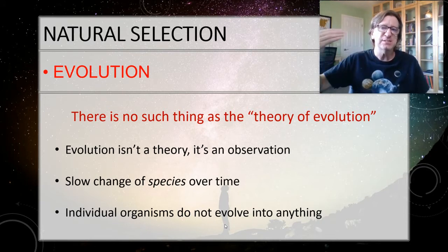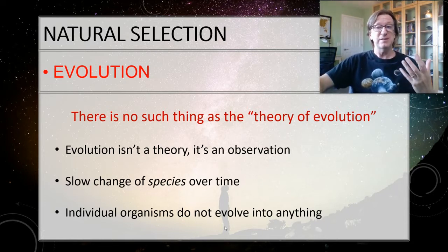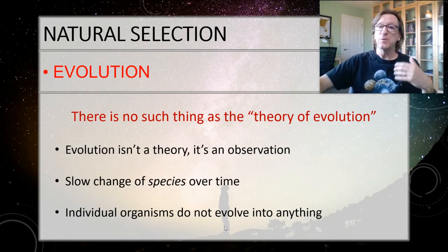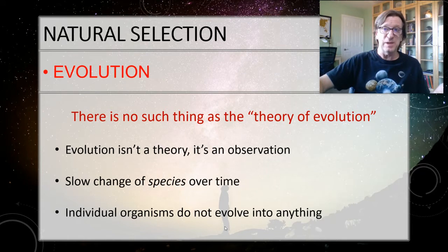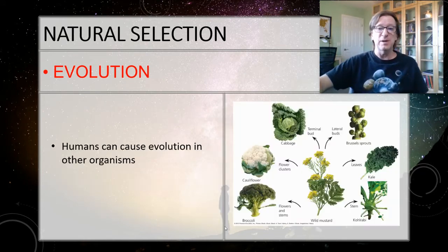We're talking about the change in species over time. If you happen to be born with a trait that helps you be more likely to live to have babies, that trait is more likely to be passed on. If you're born with a trait that makes you less likely to survive to have babies, that trait will not be passed on and eventually it will die out in the population.